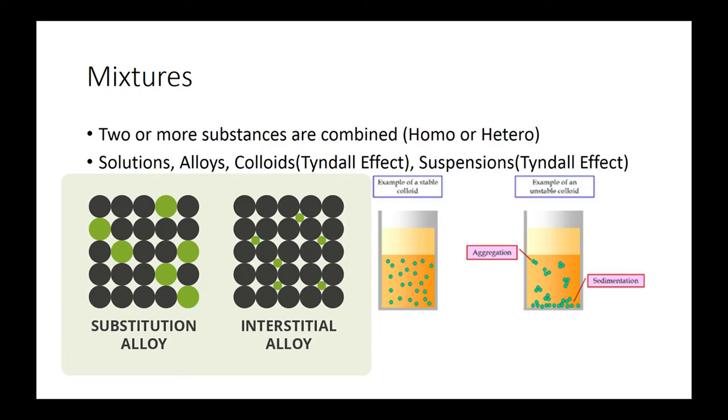Colloids and suspensions both exhibit the Tyndall effect, which you probably want to research. For alloys, there's two types. One is in between the atoms and one is just replacing the atoms. And then here are two types of colloids. Unstable, they aggregate, some fall. Stable, they're uniform throughout. And suspension is where particles are suspended in the middle of a solvent.